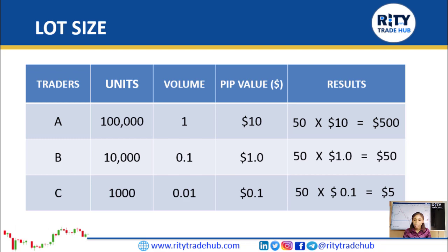One standard lot gives ten dollars per pip and 0.1 lot size gives one dollar per pip. You will see someone trying to use one standard lot on a one hundred or two hundred dollar account because they want to get rich overnight — please always stick to a lot size that is commensurate with your account. Never get greedy; the market will always be there. Next, I will show you where to adjust your lot size on MT4, depending on your account size and risk appetite.